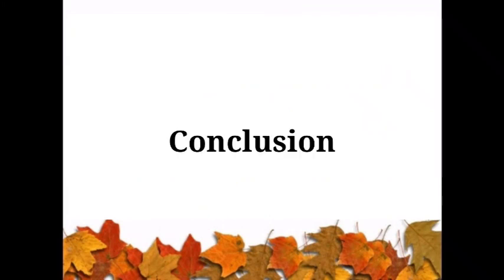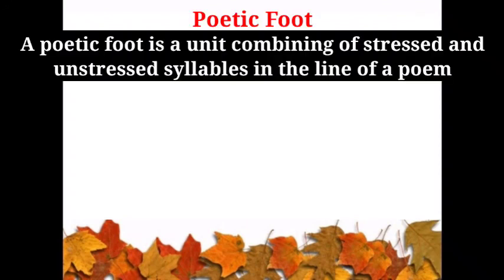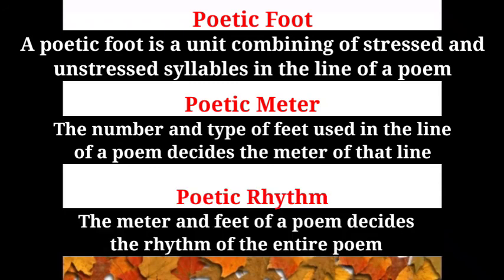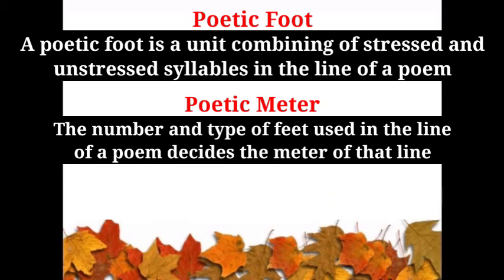So in this video lesson, we have discussed rhythm, meter, and poetic feet. A poetic foot is a single unit of a combination of stressed and unstressed syllables in a line of a poem, and it is the number and type of feet used in a line that decides the meter of that poem. It is the meter and the feet that decide the rhythm of the poem. That is the end of this video lesson. Thank you.